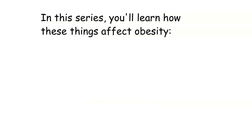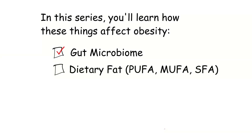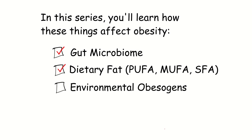In this series, you're going to learn how all of these things affect obesity that you've probably heard about. The gut microbiome — you've probably heard your gut bacteria can affect your metabolic health. Dietary fat — whether you eat polyunsaturated fats, monounsaturated fats, or saturated fat, and how that affects your health. Environmental obesogens — these are persistent organic pollutants that stick around in our drinking water, they're in the air, and sometimes they're in foods like beef.